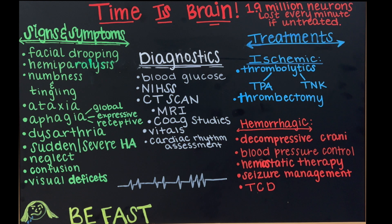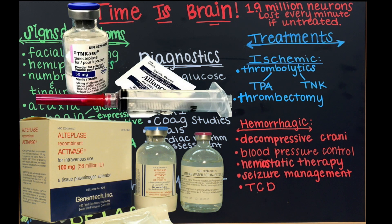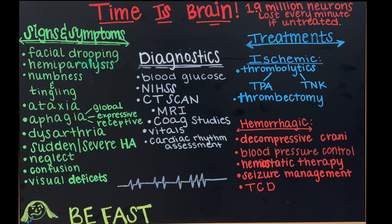Treatments differ between stroke types because ischemic and hemorrhagic strokes cannot be managed the same way. For ischemic strokes, treatment includes thrombolytics — medications designed to break up clots. Two primary thrombolytics are tPA and TNK; different facilities may use different agents and have different timelines, so this is facility-driven guidance. Both work similarly but differ in time frames and administration.